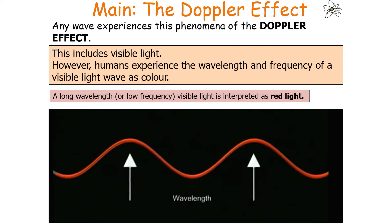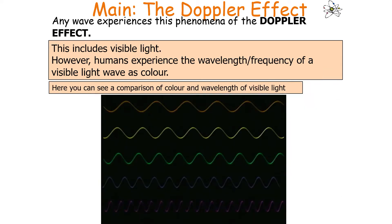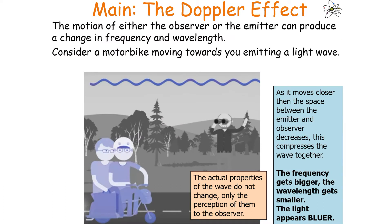Any wave experiences the Doppler effect, including visible light. Humans perceive the wavelength and frequency of visible light as colour. A long wavelength visible light is interpreted as red, and a short wavelength visible light is interpreted as blue. You can see the comparison of colour and wavelength in the image — red gives a long wavelength and blue gives a short wavelength.